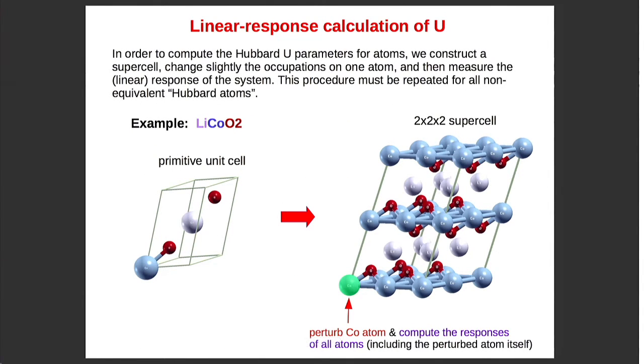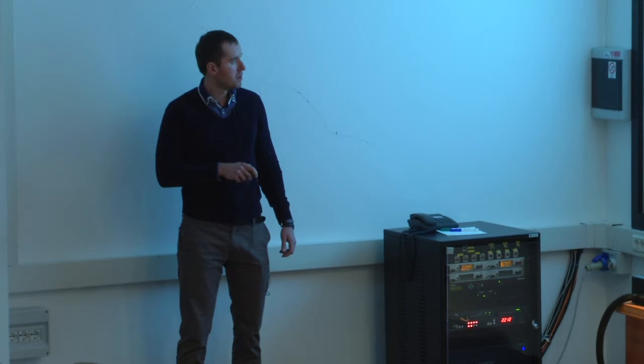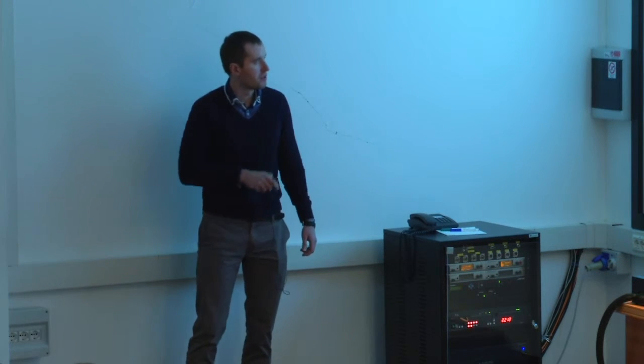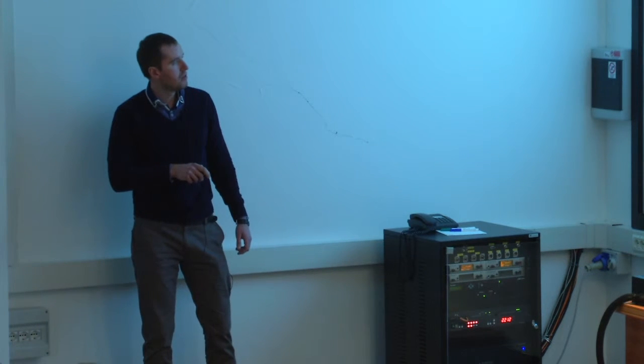So as I said, in practice, we take our system, for example, lithium-cobalt-oxygen-2, which has four atoms in a primitive cell. We construct a supercell, let's say 2x2x2, and we perturb one atom, let's say cobalt, and we compute the response of the whole system. Then we perturb another atom, oxygen, and we again compute the response.